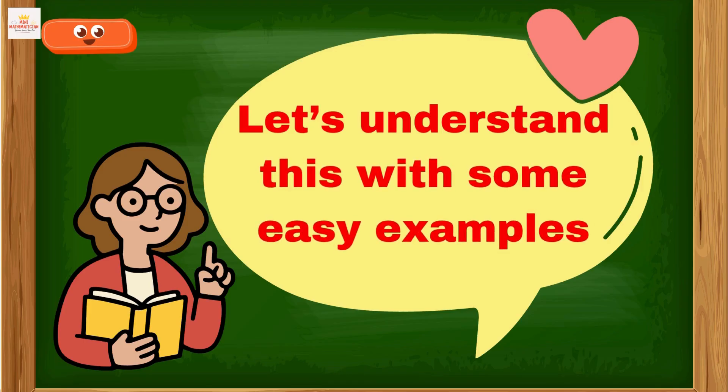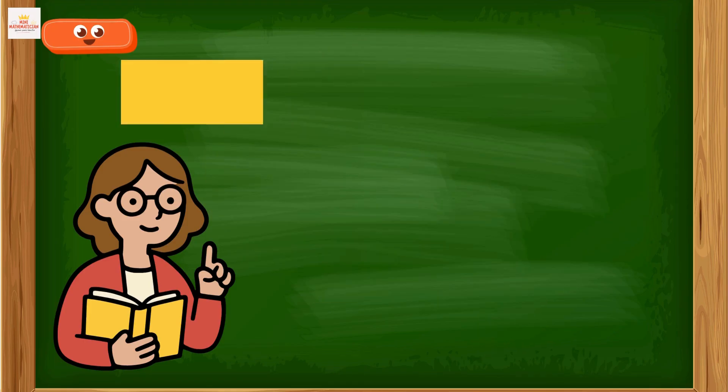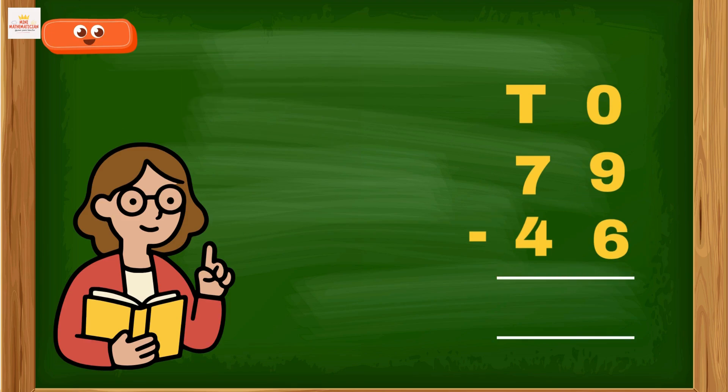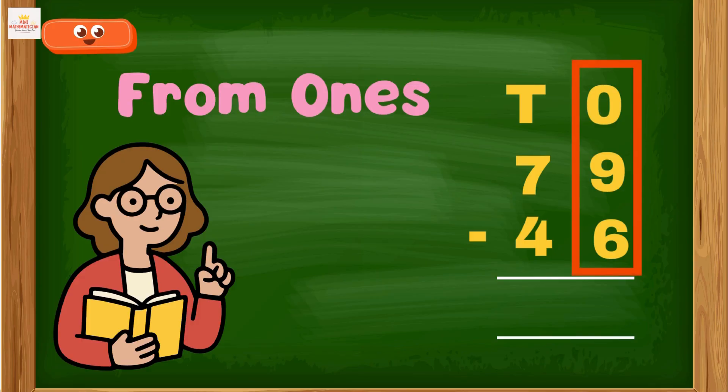Let's understand this with some easy examples. Example 1: 79 minus 46. As you already know, we always start subtraction from the ones place. So the numbers under ones are nine and six. Now nine minus six equals three. Great job kids.